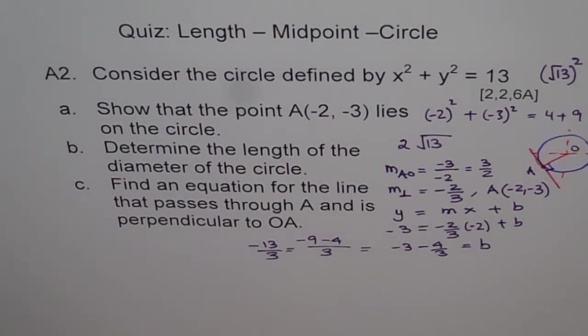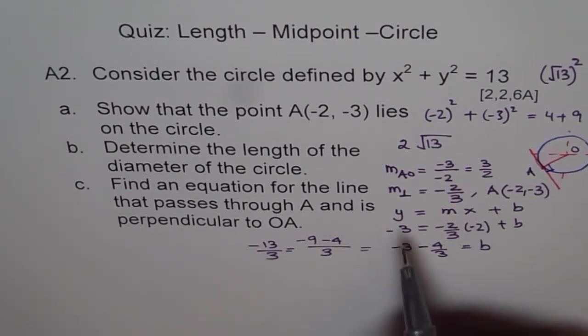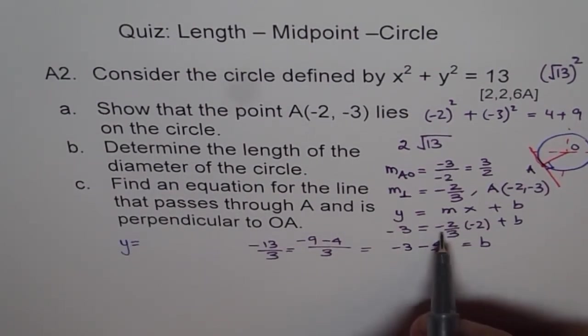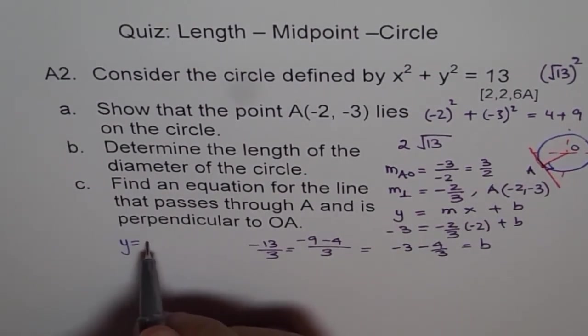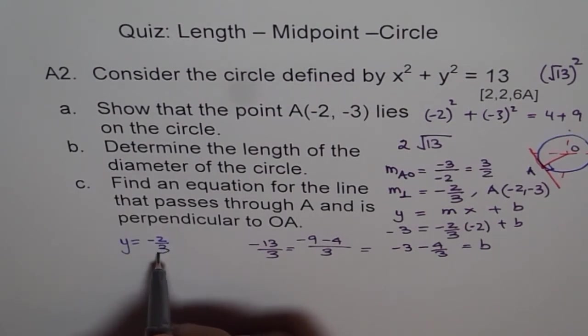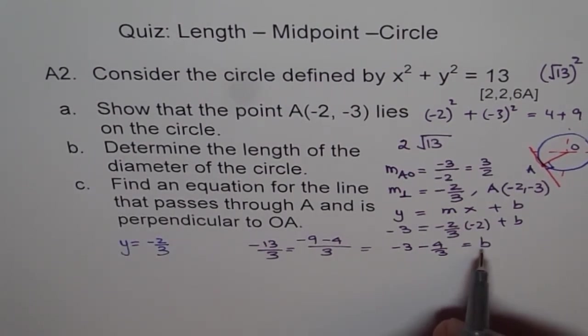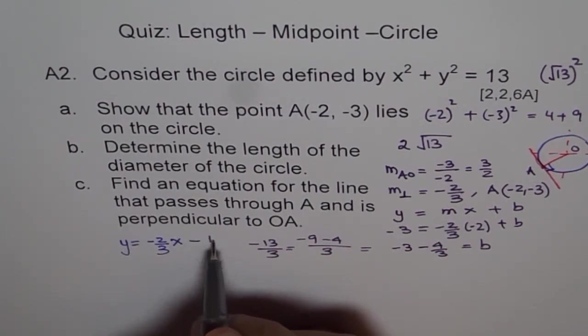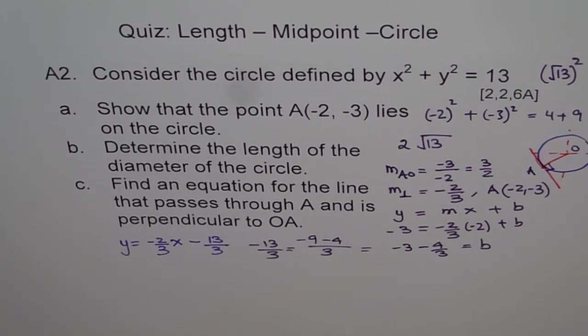So we got the value of b, and therefore, the equation of our line perpendicular should be y equals to, what is the slope for us? Minus 2 over 3, right? And b is minus 13 over 3, let me write here, x and minus 13 over 3, right?